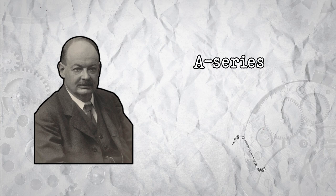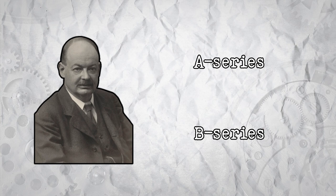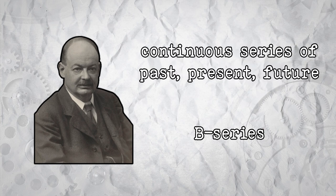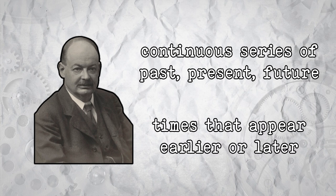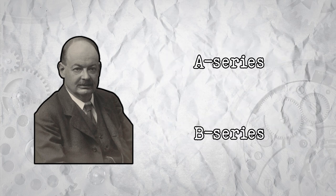McTaggart argues that time appears in our perception in two distinct ways, the A series and the B series. The A series involves a continuous series of past, present, and future, and provides us with a changing now. The B series involves times that appear earlier or later than one another and provides us with the temporal order. Together, the A series and the B series provide us with time as we understand and experience it.